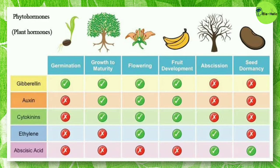In this picture, gibberellins have roles in germination, growth, maturity, flowering, and fruit development, but no effects on abscission or seed dormancy. Auxins and cytokinins are important for growth, maturity, flowering, and fruit development. Ethylene is important for flowering, fruit development, and abscission. Abscisic acid mainly functions in abscission and seed dormancy and inhibits plant growth rather than promoting it.